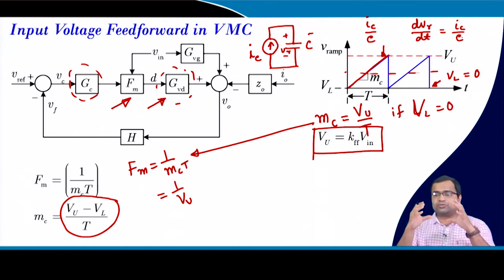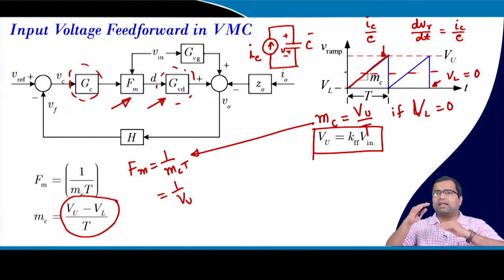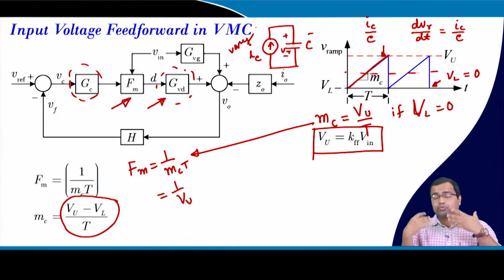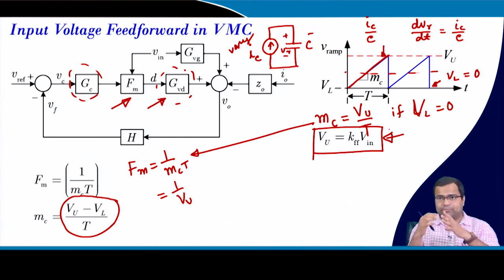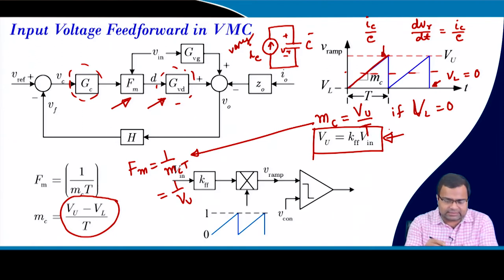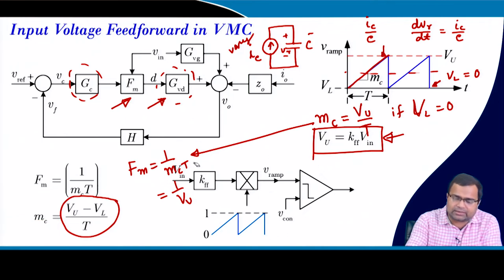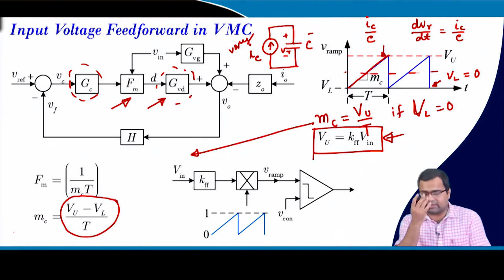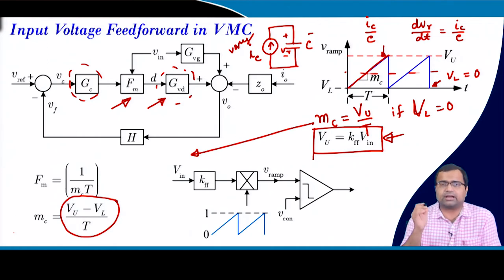Here in the Simulink model we are implementing the feed forward, though in actual circuit level it can be implemented using this variable current source. In Simulink we are going to implement this same action.